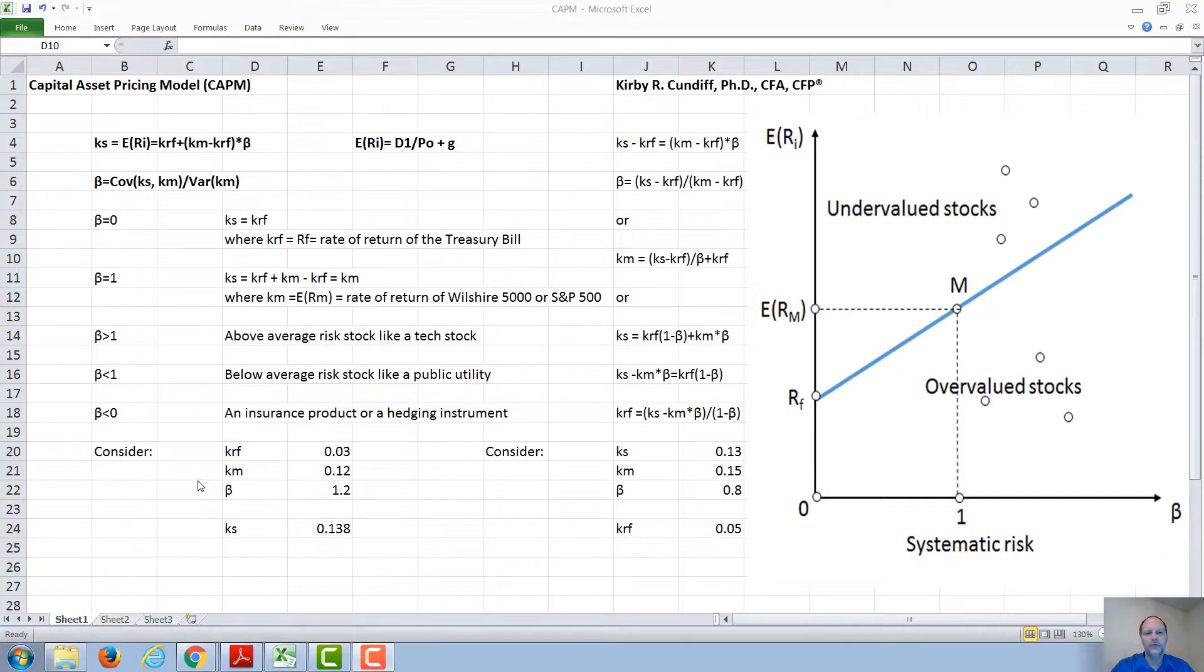As a sample calculation, consider a risk-free rate of 3%, a market rate of return of 12%, and an above average risk stock with beta of 1.2.